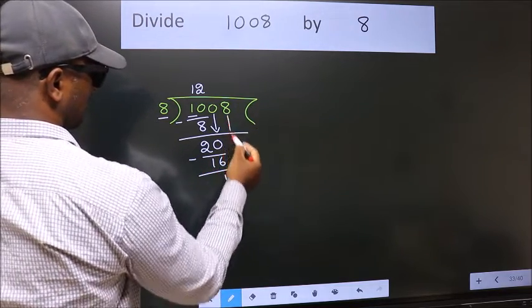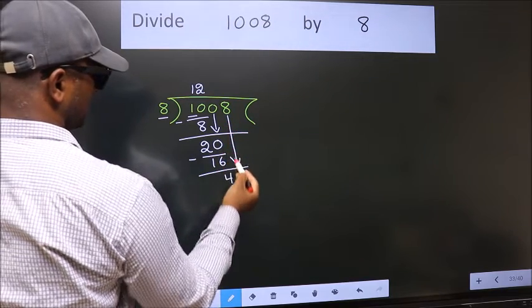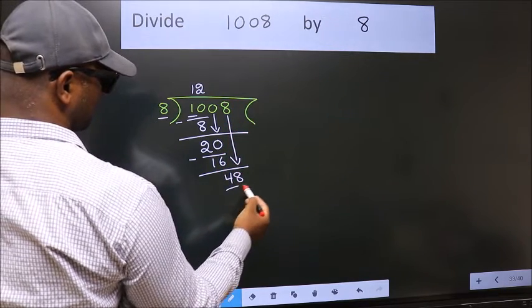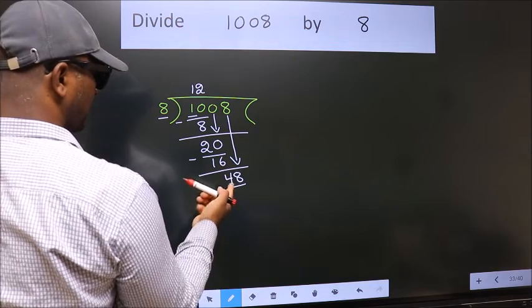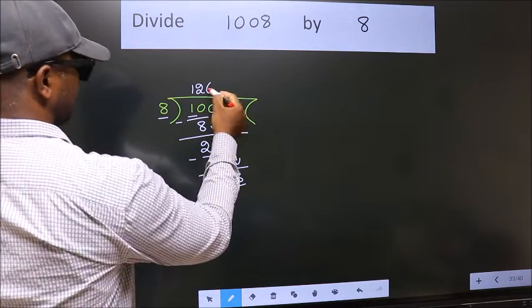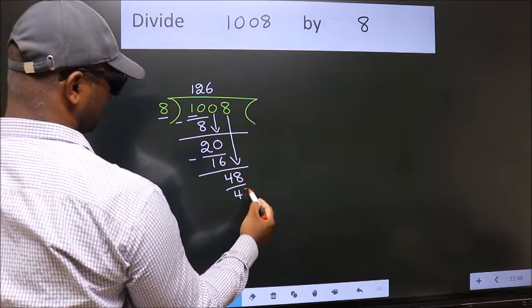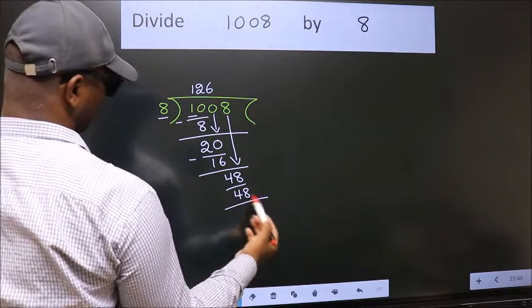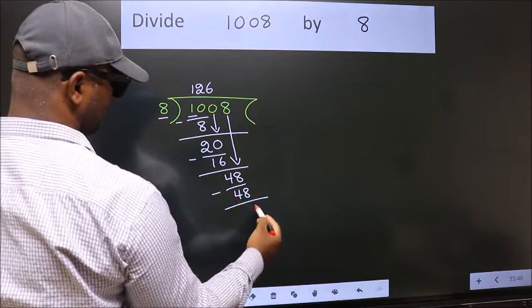After this, bring down the beside number, so 8 down. Now we have 48. When do we get 48 in the 8 table? 8 times 6 is 48. Now we subtract and get 0.